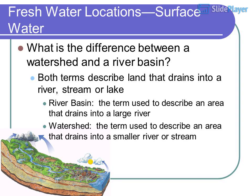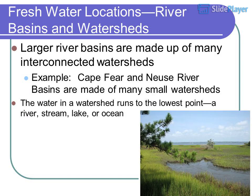Fresh water locations — surface water. What is the difference between a watershed and a river basin? Both terms describe land that drains into a river, stream, or lake. River basin is the term used to describe an area that drains into a large river, while watershed describes an area that drains into a smaller river or stream.